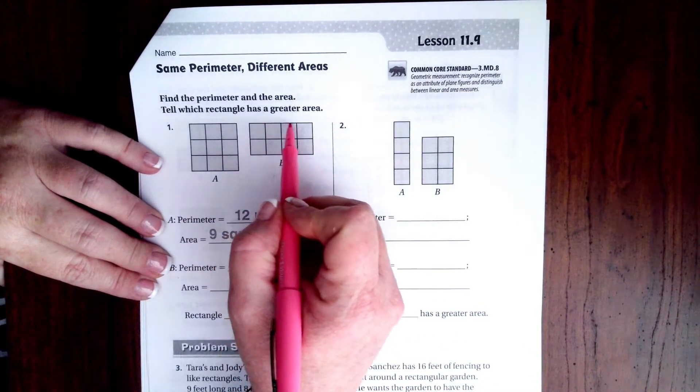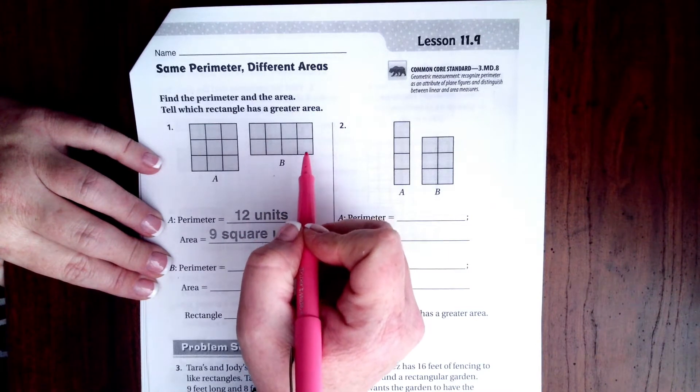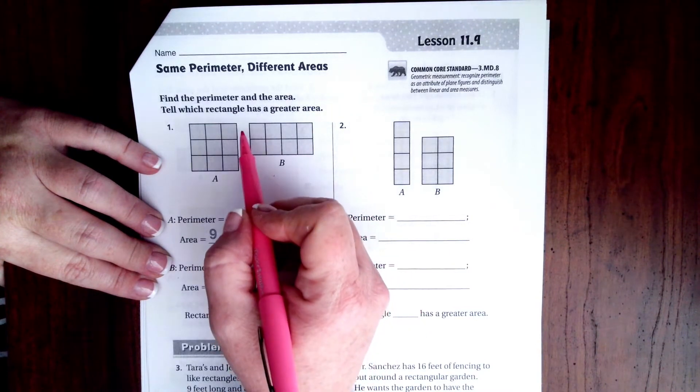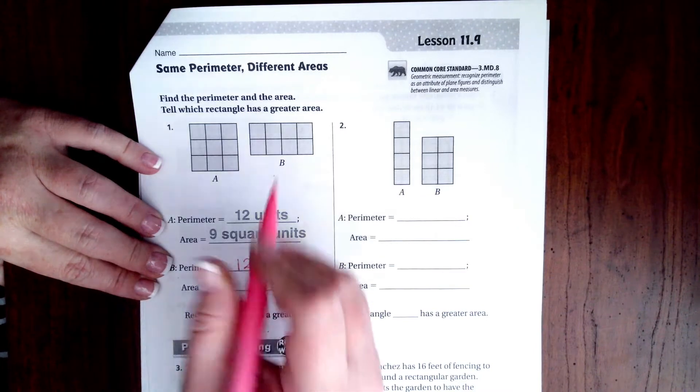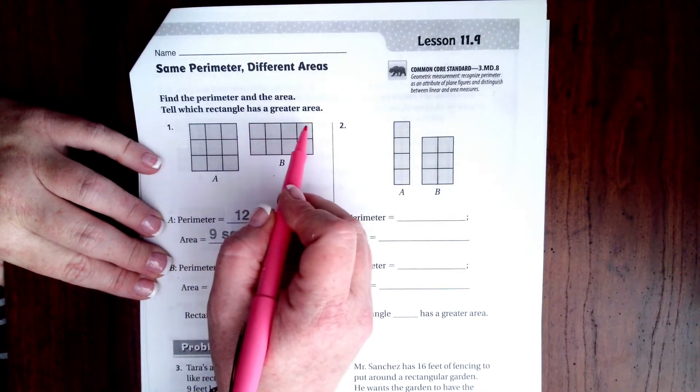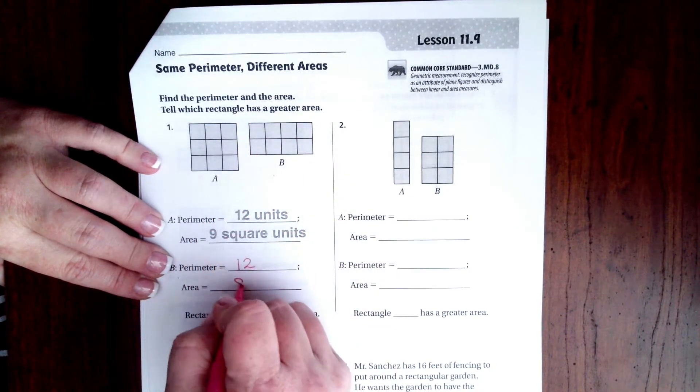So, perimeter is 1, 2, 3, 4, 5, 6, 7, 8, 9, 10, 11, 12. The area would be 1, 2, 3, 4 times 1, 2, which is 8.